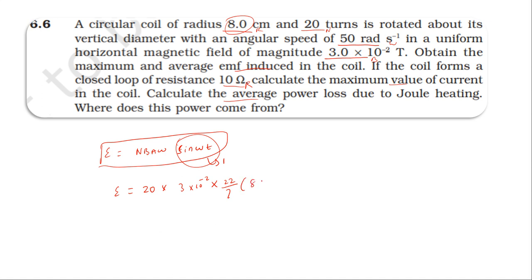r is 8 centimeter. Converting to meters, that's 10 power minus 2. Putting in the number of turns, magnitude of the field, area into omega. Omega is 50 radian per second.